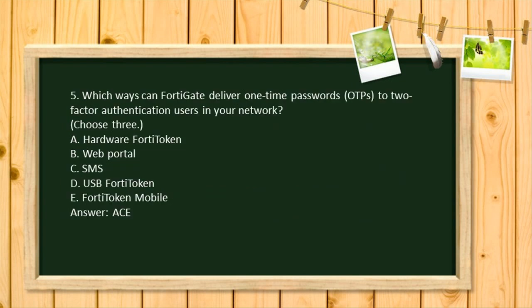Question 5. Which ways can FortiGate deliver one-time passwords (OTPs) to two-factor authentication users in your network? Choose 3. A. Hardware FortiToken. B. Web Portal. C. SMS. D. USB FortiToken. E. FortiToken Mobile. Answer: A, C, E.